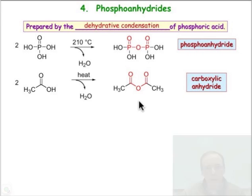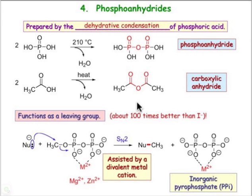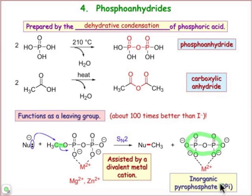What are some of the properties of the phosphoanhydride? For one thing, it forms an excellent leaving group in substitution chemistry. For example, the bond between this carbon and oxygen group is broken to generate inorganic pyrophosphate, whose structure is shown here. It's often abbreviated as PPi — a structure you'll want to memorize, as you'll see it a lot in biochemistry. This reaction is accelerated by chelation to divalent metal ions such as magnesium and zinc, which causes electron density to be polarized in this bond and facilitates the reaction.